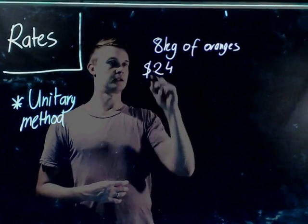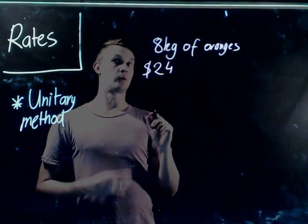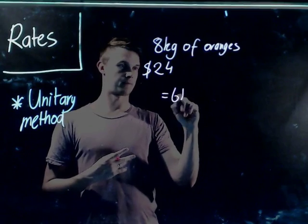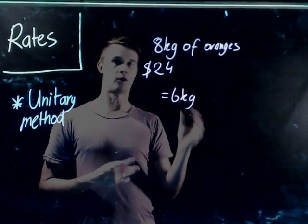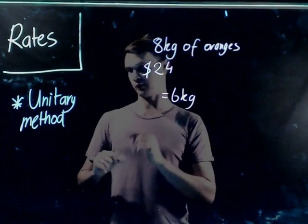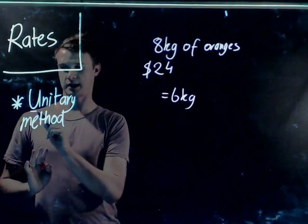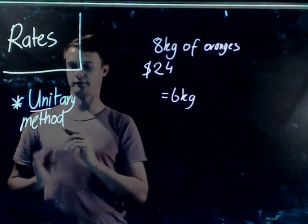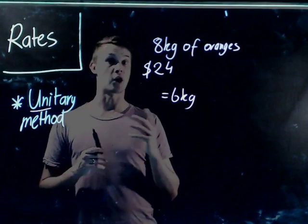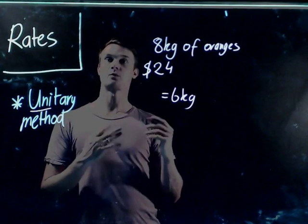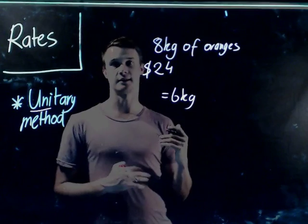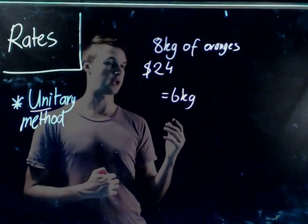We want to know how much six kilos of oranges would cost. When we think of the unitary method, if you underline the first part of the word it says 'uni,' which we know means one. So the best way for finding out rates is actually trying to find out what one unit would be.